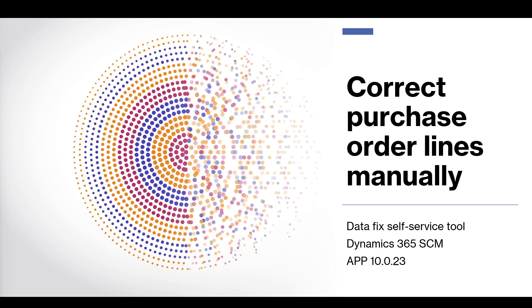Hello and welcome to this session about the new DataFix self-service tools: Correct Purchase Order Lines Manually. This feature will be released in app 10.0.23 and it will be enabled by default underneath the periodic tasks of the Procurement and Sourcing module.